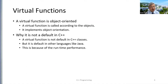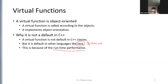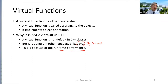Virtual functions implement object orientation, but why is it not the default in C++? The simple answer is because of worry about runtime performance. In other languages such as Java it is the default, so there is no keyword called virtual in Java because everything is virtual in Java. In C++ you may declare a function as either virtual or non-virtual — you have options.